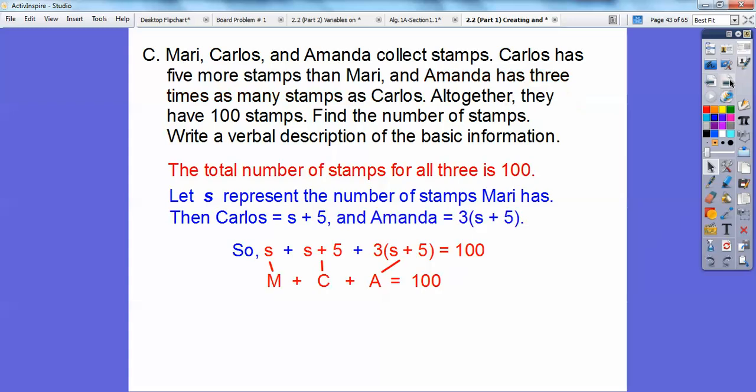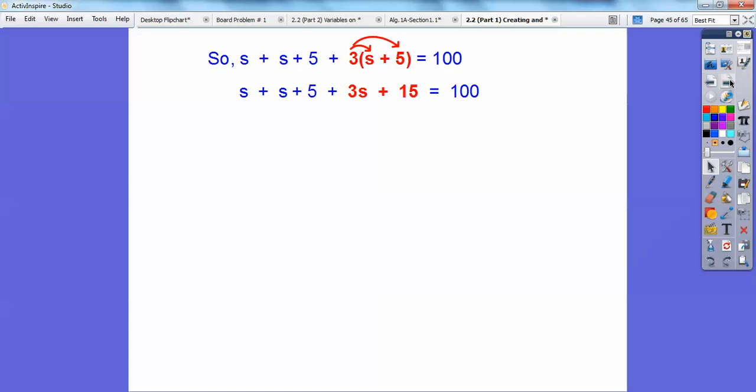S plus 5 is Carlos and three times S plus 5 is Amanda. And it says the total number of stamps is 100. So we're going to go ahead and add them up to be 100. Let's go ahead and put that 3 through by the distributive property right there. So 3 times S and then 3 times 5. Most of my kids will get this part okay and distribute that first part, but they often, me too you guys, I forget to put the 3 all the way through. 3 times 5 is 15. Let's combine like terms. S plus S plus 3S is going to give us 5S and then this plus 5 and plus 15 is this plus 20 right here.